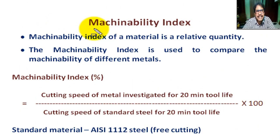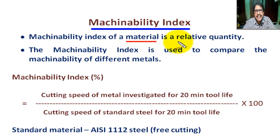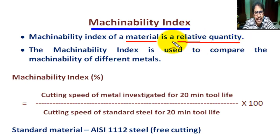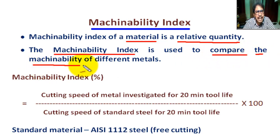Now, what is machinability index? The machinability index of a material is a relative quantity — that means it is compared with a standard material. The machinability index is used to compare the machinability of different metals.